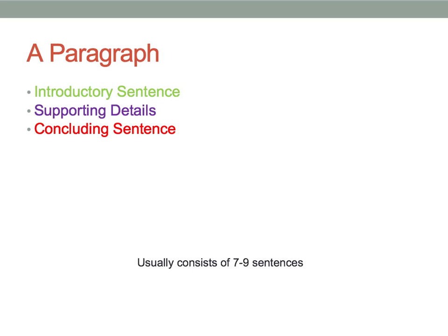Before we begin writing our paragraph, we should remind ourselves what the basic structure of a paragraph looks like. The basic structure starts off with an introductory sentence, followed by some supporting details, and finally a nice concluding sentence. Also remember that a good paragraph usually consists of around seven to nine sentences.